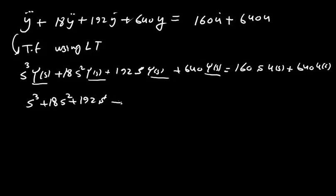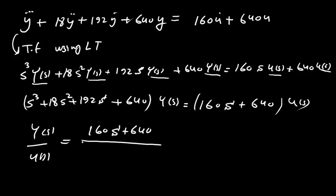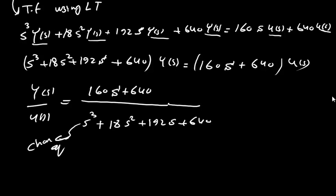Taking Y(s) as a common factor gives us (s³ + 18s² + 192s + 640)·Y(s), and taking U(s) as common gives (160s + 640)·U(s). So the transfer function Y(s)/U(s) equals (160s + 640) / (s³ + 18s² + 192s + 640).